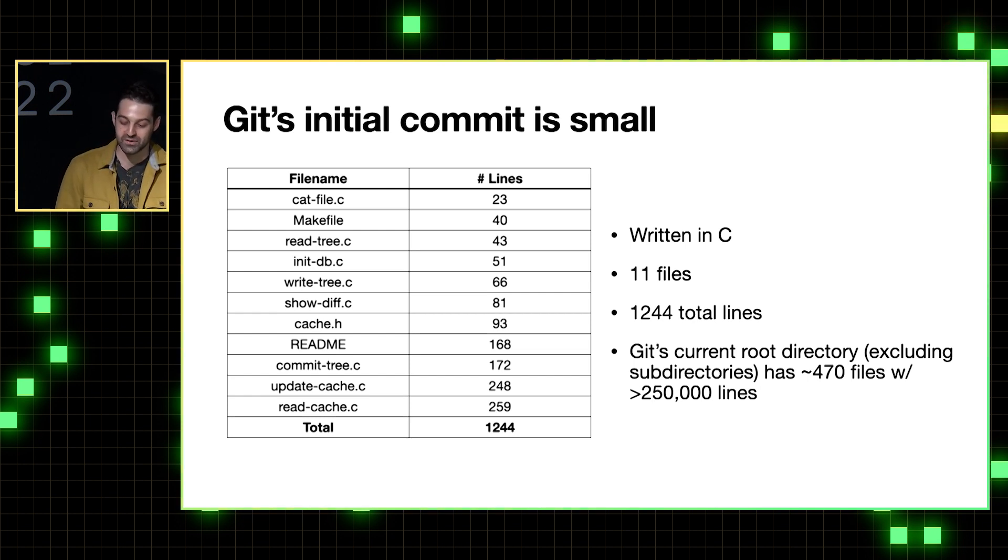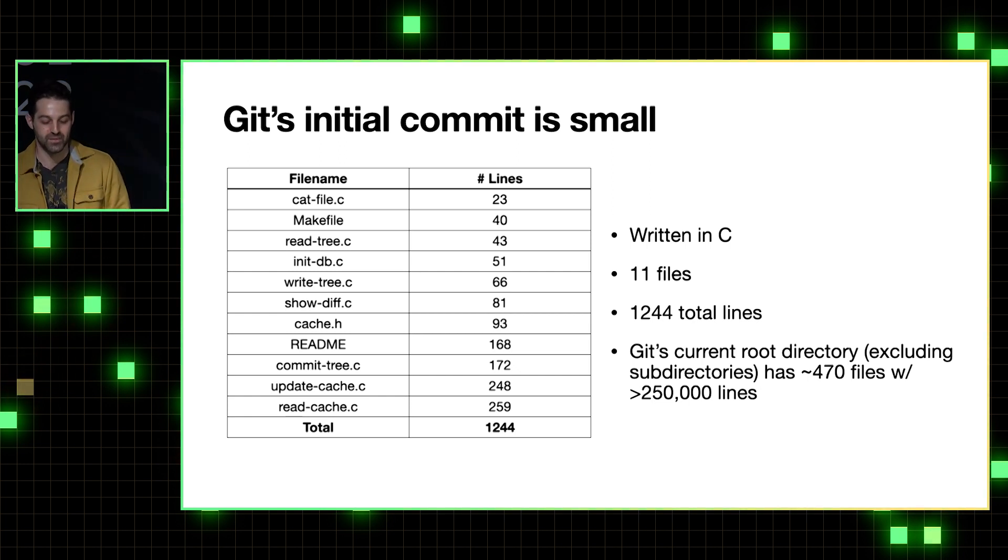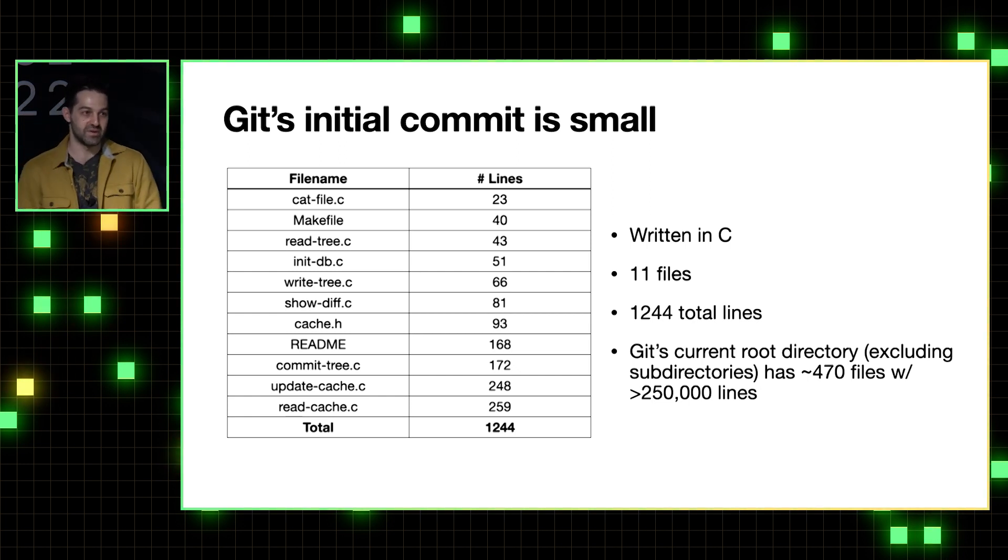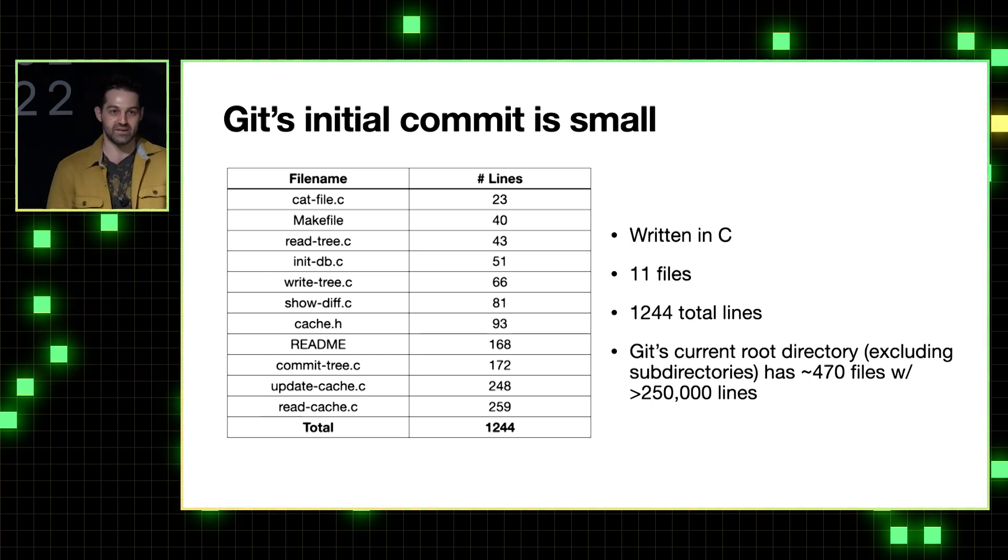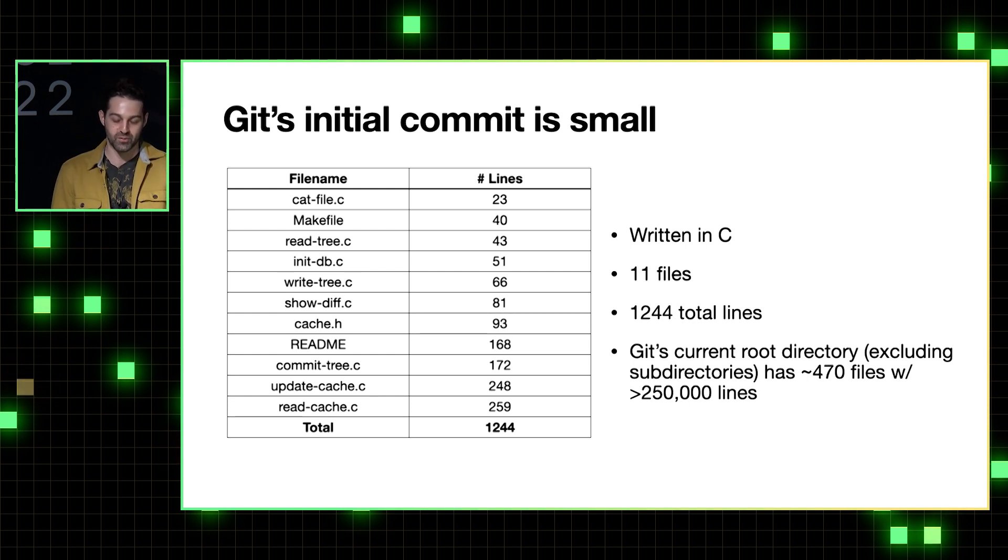And obviously that's because Git's modern code base has 17 years of active development on top of the initial commit, along with all of the features and functionality and stability that we get and expect from Git. But regardless, Git's initial commit is still a great representation of some of its core functionalities packaged up in a super small package that makes it very approachable to a newcomer like me when I first stumbled upon Git's code.